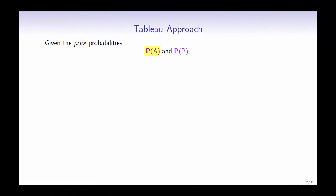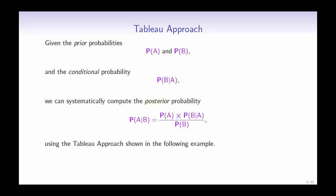Given the prior probabilities — the probability of A and the probability of B — and given the conditional probability, the probability of B given A, we can systematically compute the posterior probability, that is the probability of A given B, using the Tableau approach in the following example.